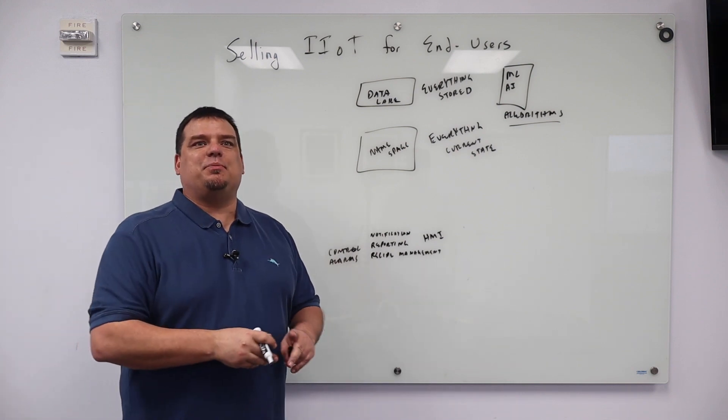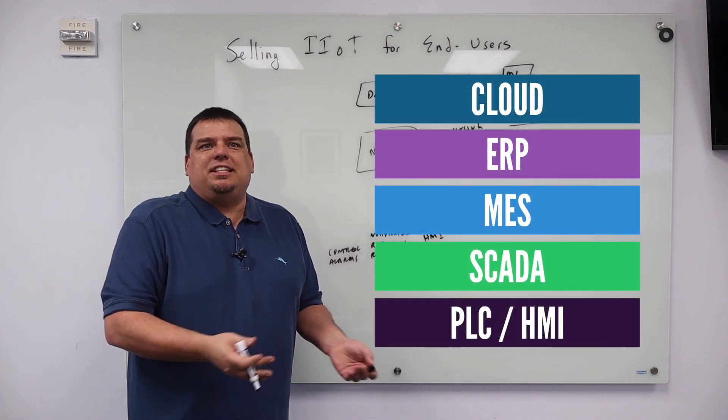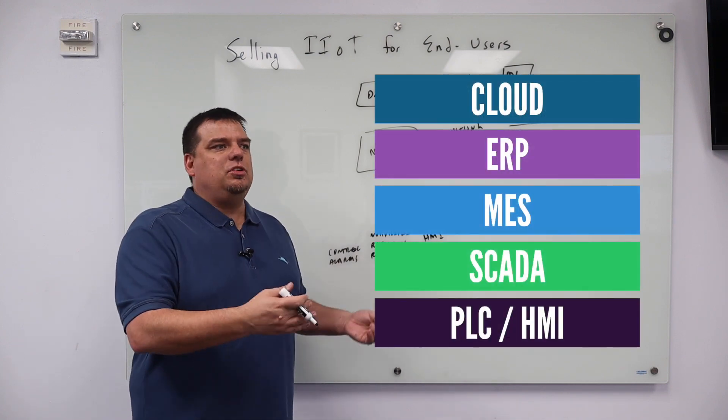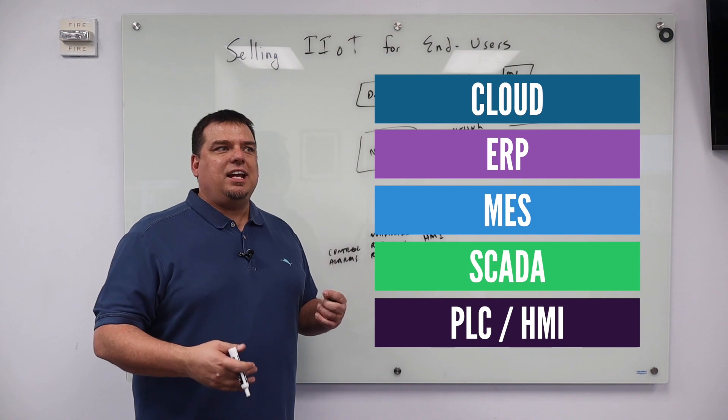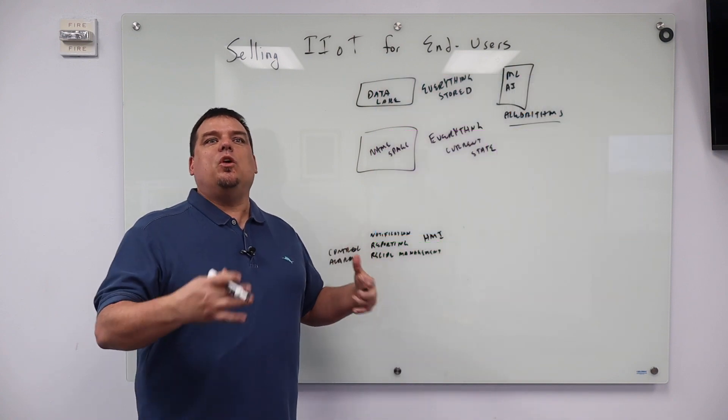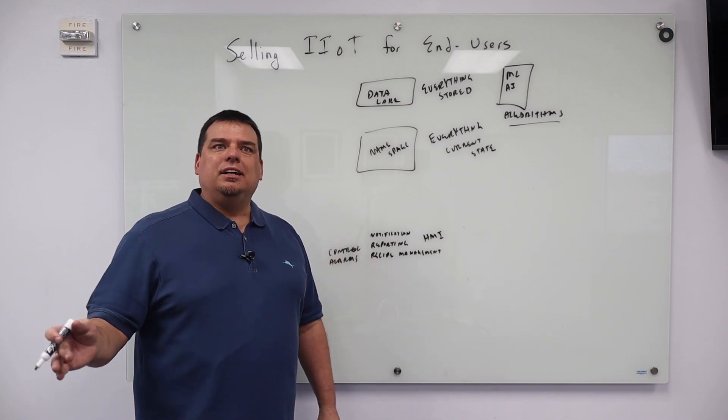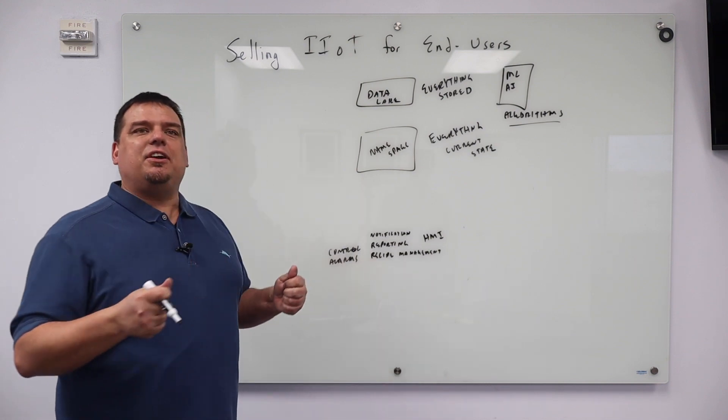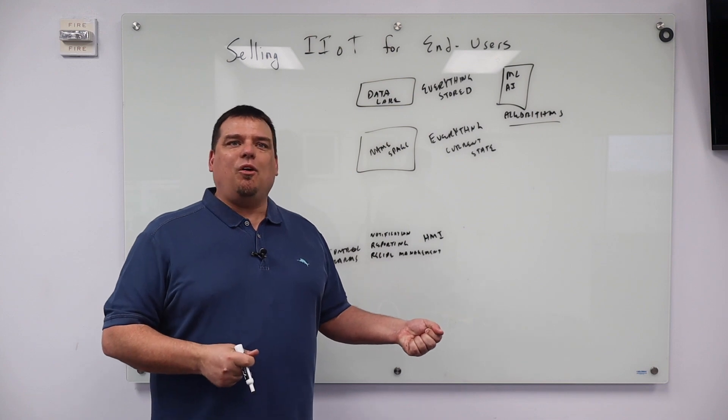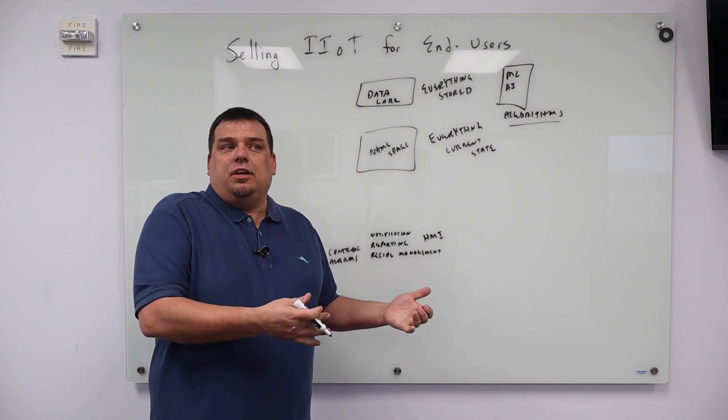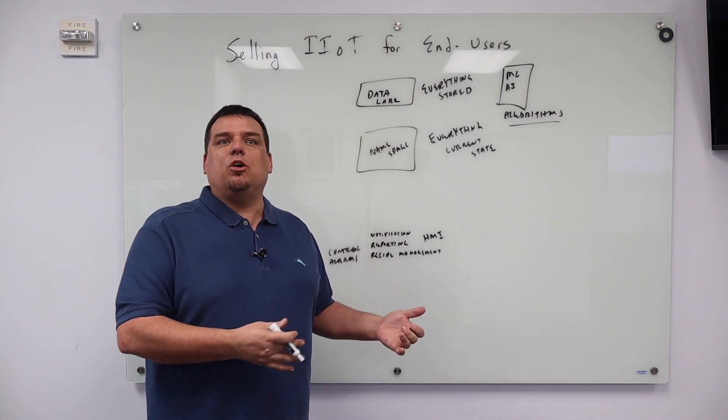This is why when people ask me questions about the Purdue security model, I just giggle. It's not that the Purdue security model is useless, it's that it won't exist. It's not even going to apply. It's not even going to apply by the time my career is winding down. It's like trying to fit a round peg through a square hole. The Purdue security model is not even going to apply.